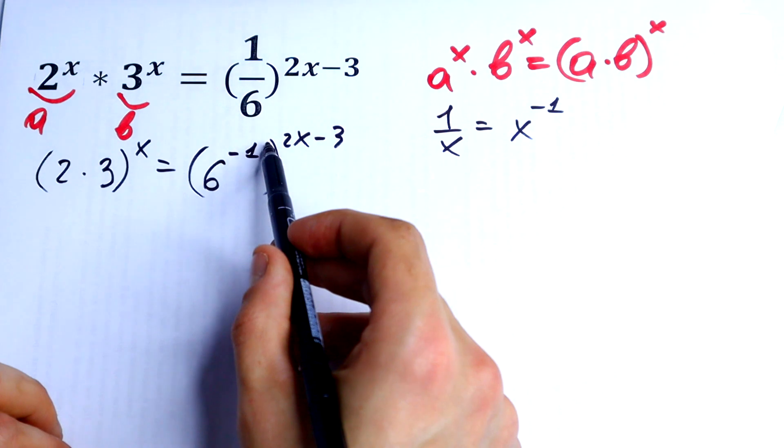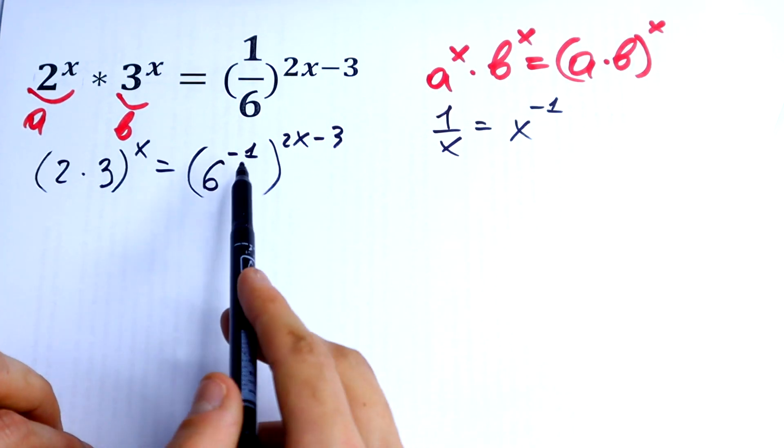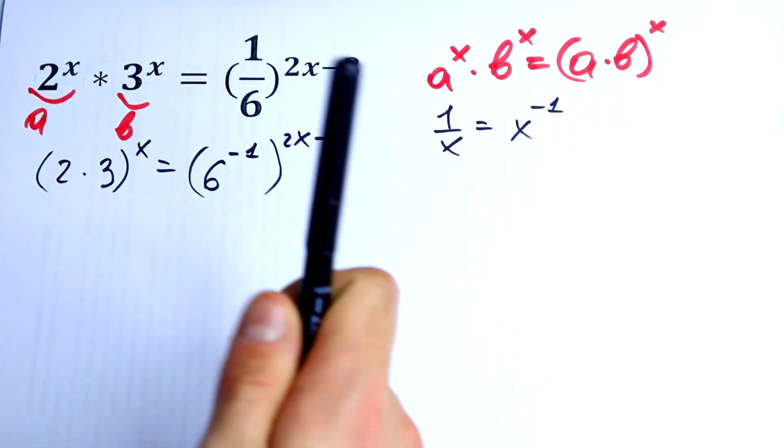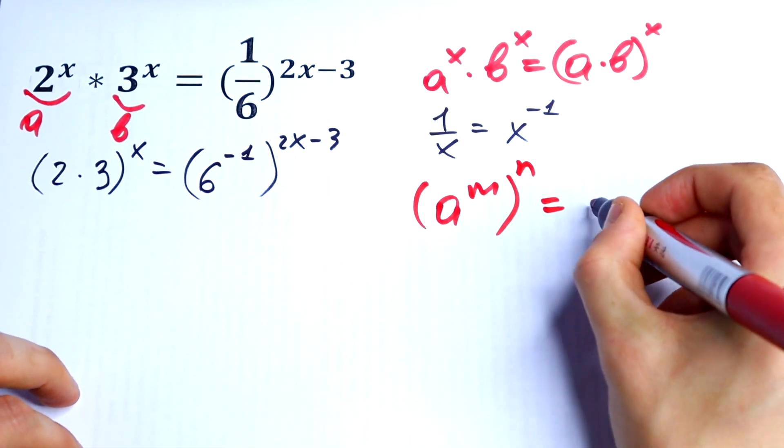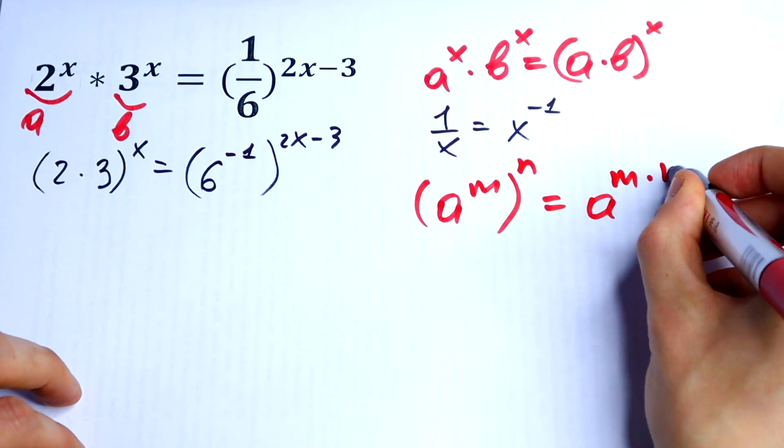We can multiply these exponents because of the rule: if we have (a^m)^n, we just multiply the exponents to get a^(m*n).